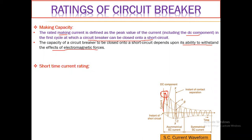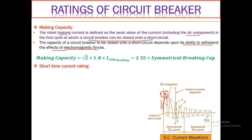The capacity of the circuit breaker to close onto a short circuit depends upon its ability to withstand the large electromagnetic forces. When short circuit current is 8 to 10 times the normal rated value, large electromagnetic forces develop causing vibrations that may seriously damage the contacts. Making capacity is calculated as: Making Capacity = √2 × 1.8 × Symmetrical Breaking Capacity = 2.55 × Symmetrical Breaking Capacity, where 1.8 represents the DC component and √2 converts RMS to peak magnitude.